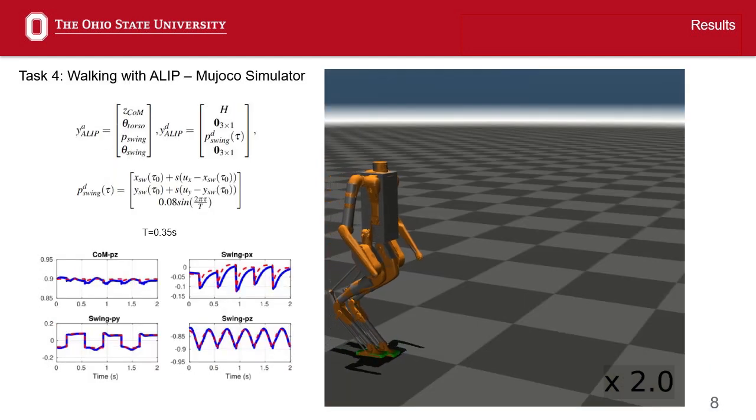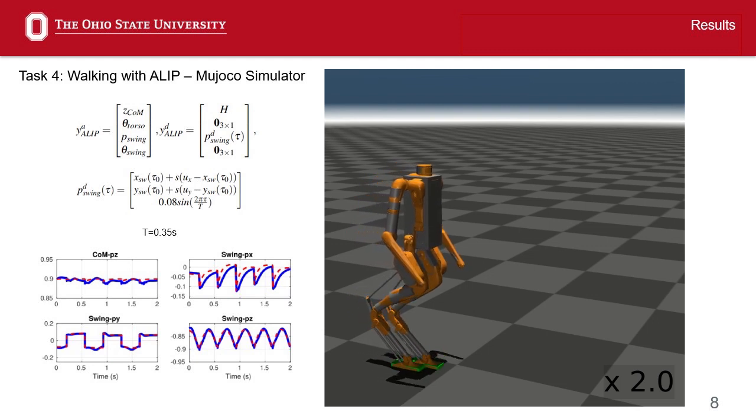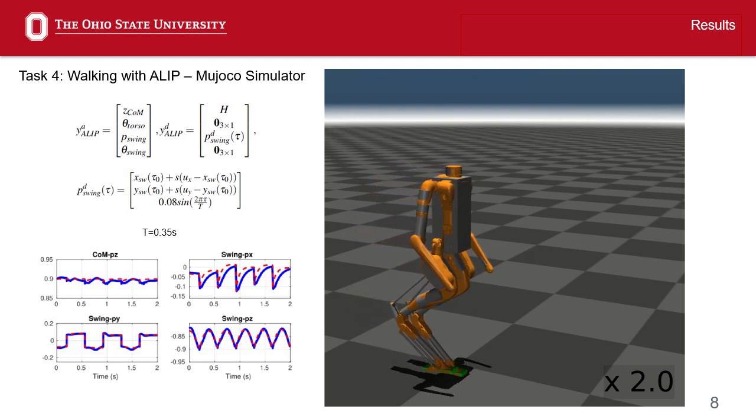In task 4, we use a single support sequence for walking using the A-LIP model, observing a constant center of mass height and accurate same foot placement.